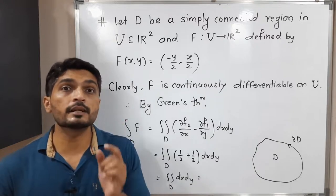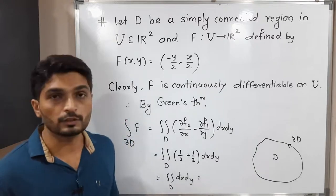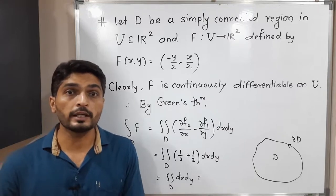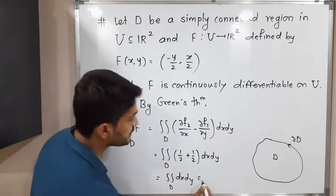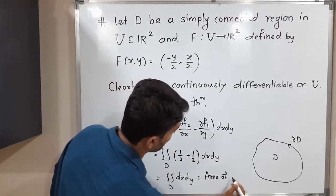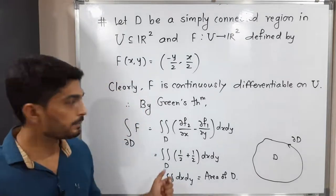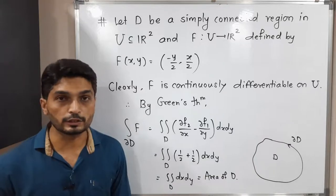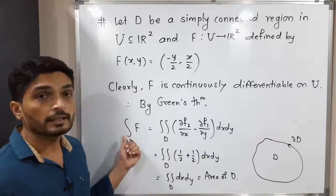You know that when you have a double integration without any function—that means the function is 1 only—it represents the area of that region D. Since there is no function, this is a formula for calculating area. So this is nothing but the area of region D.